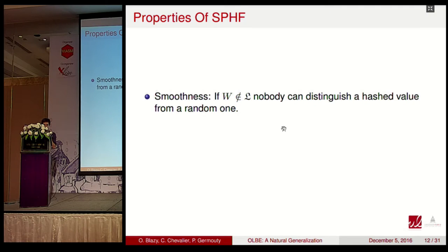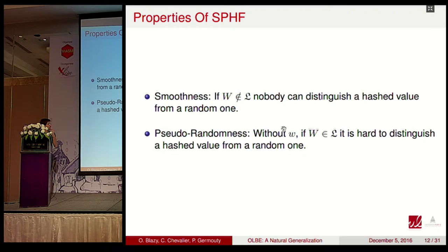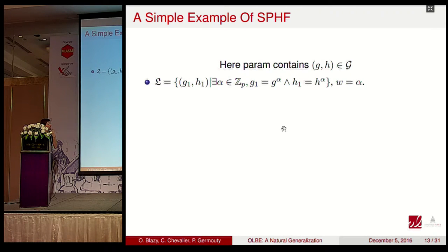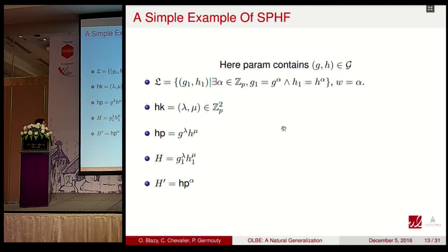We want the SPHF to be smooth: if the word does not belong to the language, nobody can distinguish a hash value from a random one. As a small example, we choose two group elements g and h, the language is all spans of the vector (g, h), the witness is the discrete logarithm of the word, and we compute the hash and projected values such that H and H' are the same.